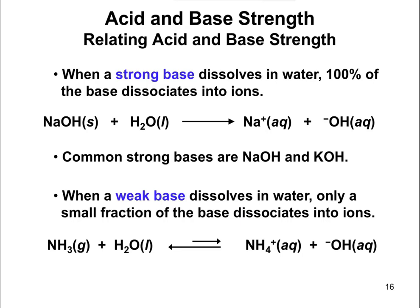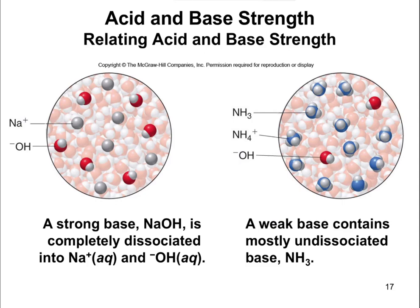The same definitions hold true for bases. A strong base — 100% — dissolves into ions. A weak base only partially dissociates. Common strong bases are sodium hydroxide and potassium hydroxide. In general, most hydroxide-containing bases are strong bases. A weak base would be something like NH3, ammonia — and many nitrogen-containing compounds are weak bases because they have a lone pair of electrons, which is what you need to be a base. NH3 accepts a proton and becomes NH4+. A strong base completely dissociates into its ions; a weak base only partially dissociates.